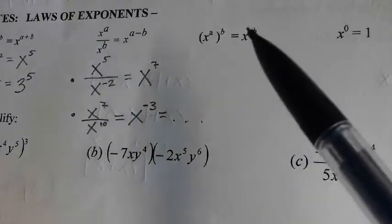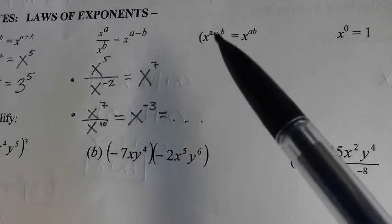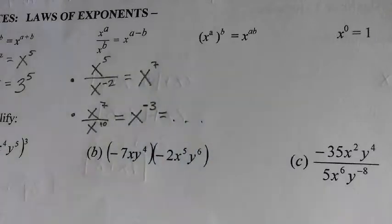Next one is the power to power rule. So, x to the a power then to the b power. If you ever hear yourself saying to the third to the fourth, kind of double like that. We multiply that straight forward.